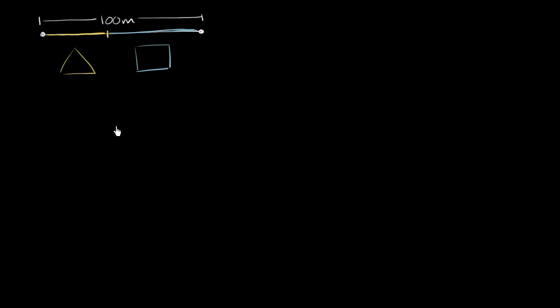The question is: where do we make this cut in order to minimize the combined areas of this triangle and this square? Let's define a variable that we're trying to optimize with respect to.